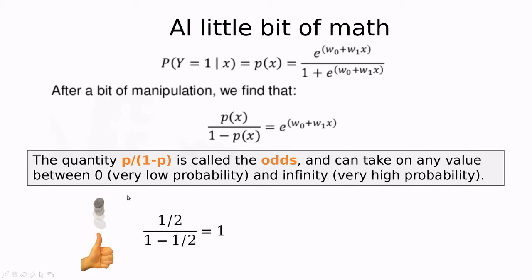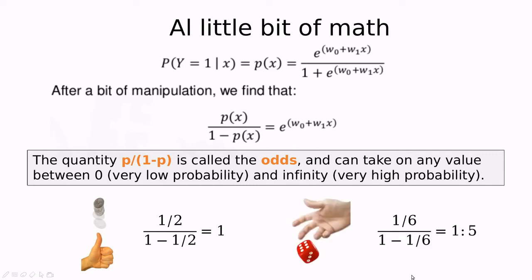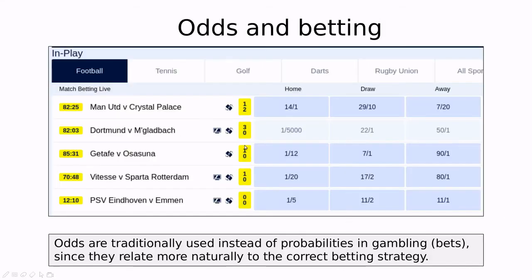Imagine a fair coin — in this case the odds are one, because you have the same probability of winning and losing. If the probability of winning is one in six, like throwing a specific number on a dice, then you have five to one odds, because you have five more chances of losing than winning. This is the meaning of odds, borrowed from the world of gambling. On a betting webpage, for instance, Manchester United versus Crystal Palace might have odds of 14 to one, giving you an idea of the probability.